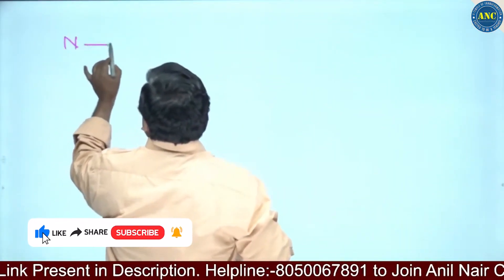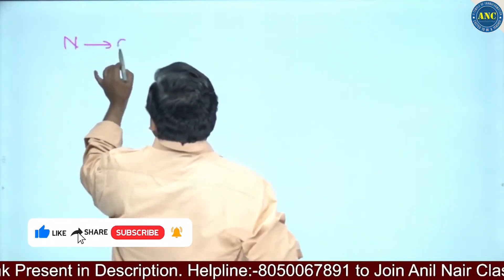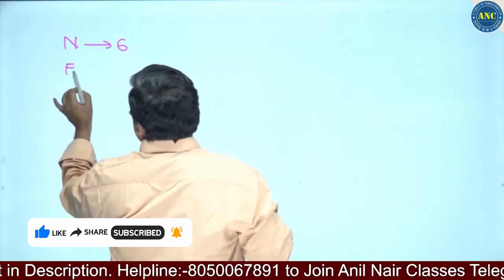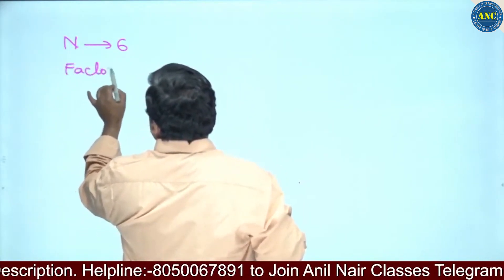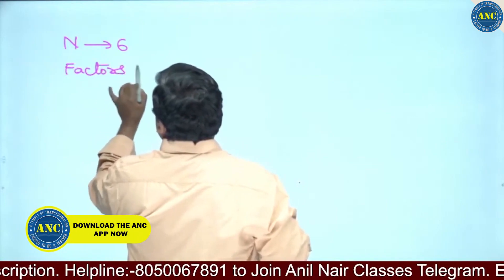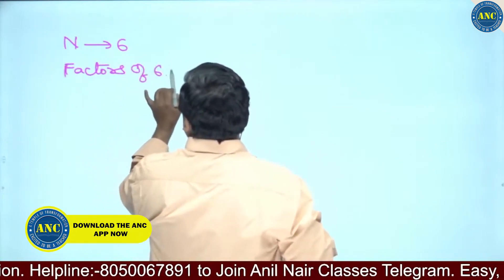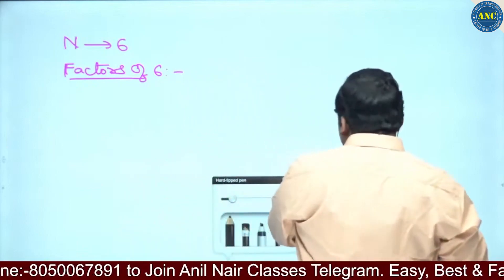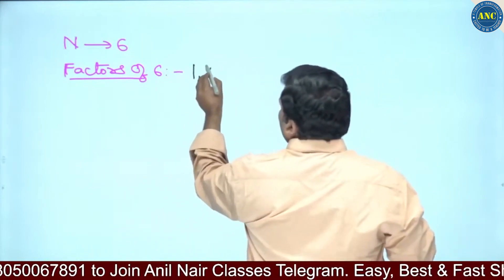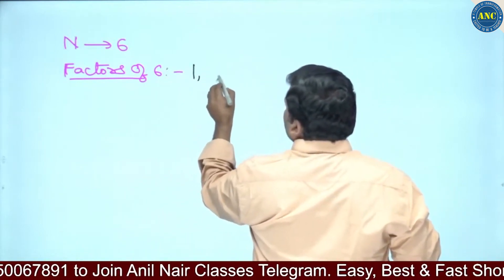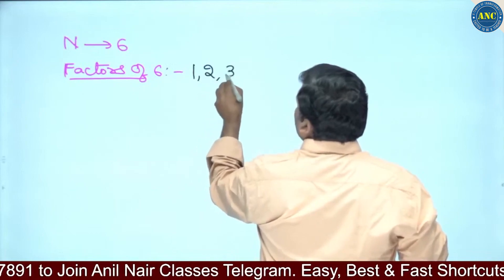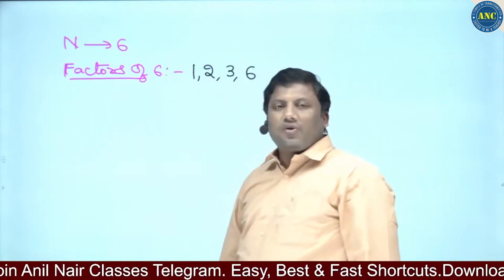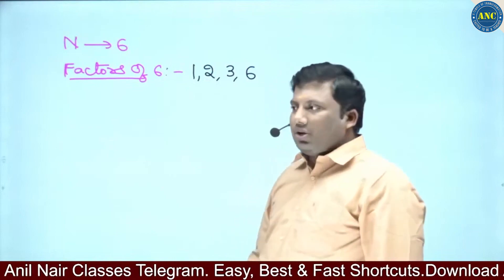Suppose I take a number 6. What are the factors of 6? Let me write them down. Factors of 6 are: 1 is a factor, 2 is a factor, 3 is a factor, and 6 is a factor. So the factors of 6 are 1, 2, 3, and 6.